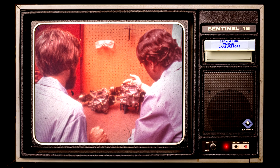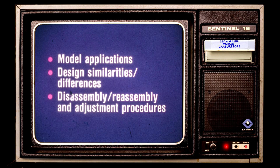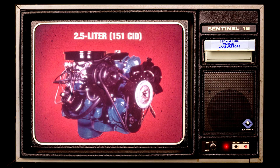The 2SE and E2SE carburetors look very similar and are both used on the same 1980 engine — the 2.5 liter four cylinder. There are three areas to be familiar with regarding these new carburetors: model applications, design similarities and differences, and disassembly, reassembly, and adjustment procedures. These are the three areas discussed in this training film.